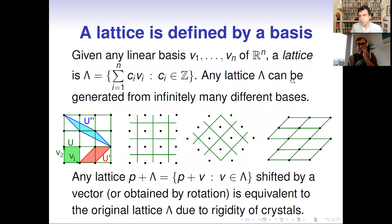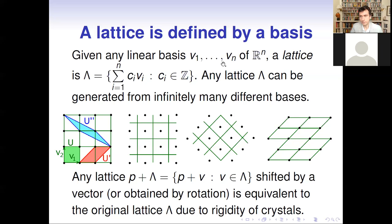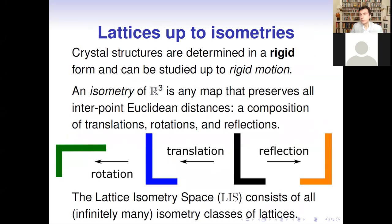Let me start from basic definitions. A lattice is defined by a linear basis in any n-dimensional space. The pictures here illustrate two-dimensional examples, but we will talk mainly about the three-dimensional case today. We study lattices up to isometries because crystal structures are determined in rigid form — that's why it's very natural to study crystals, and in particular crystal lattices, up to rigid motion or isometry. Today this will be a general isometry also including reflections.